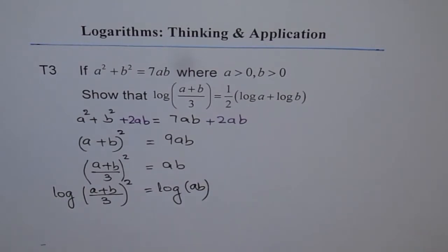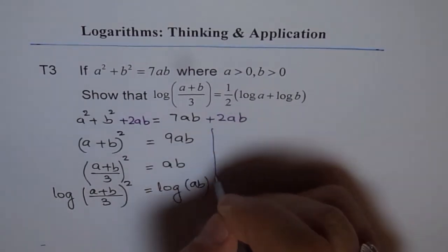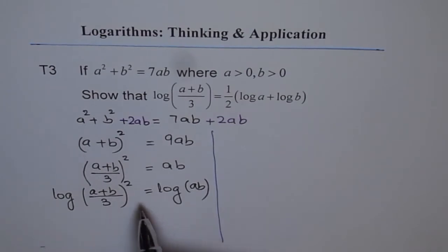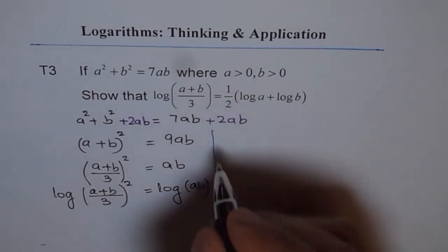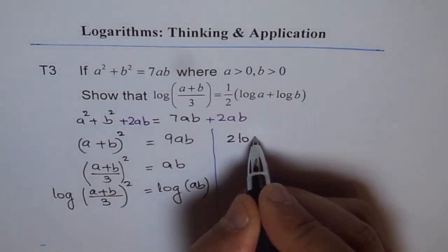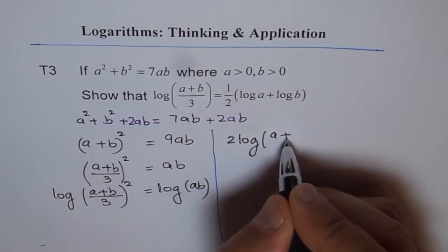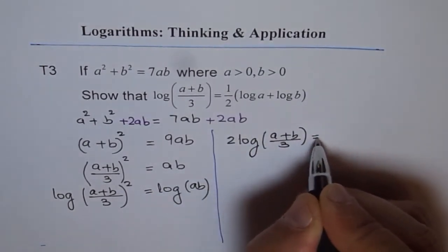Now let me get the result on the right side. Always the result should be there on the right side. So this gives me 2 times log of a plus b over 3 equals to,